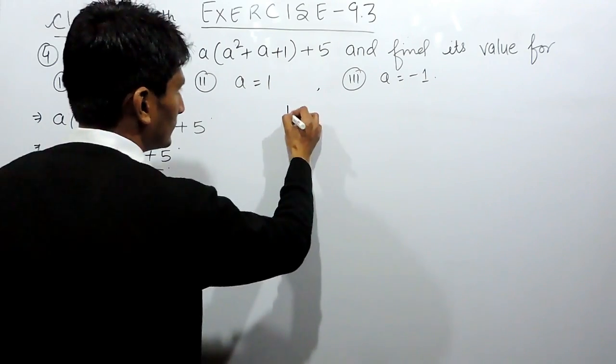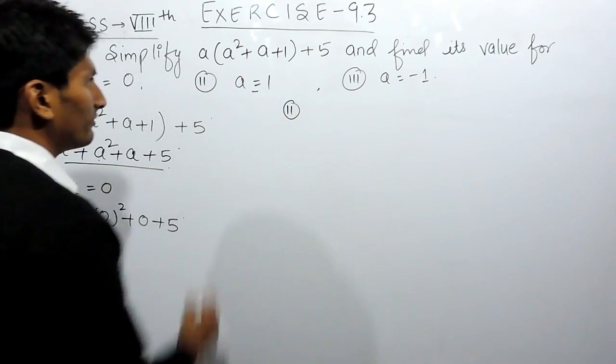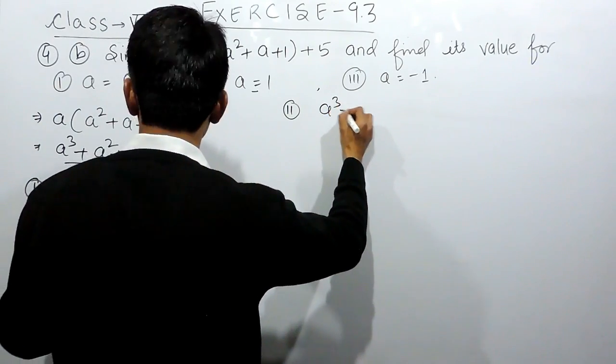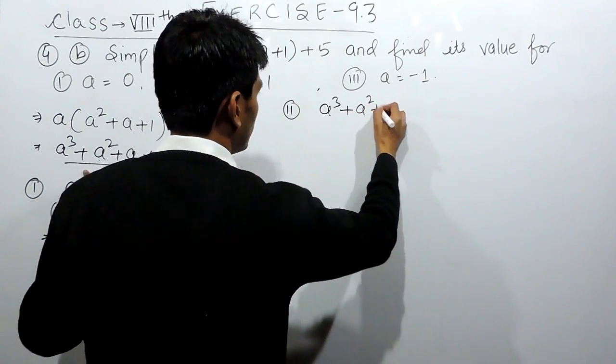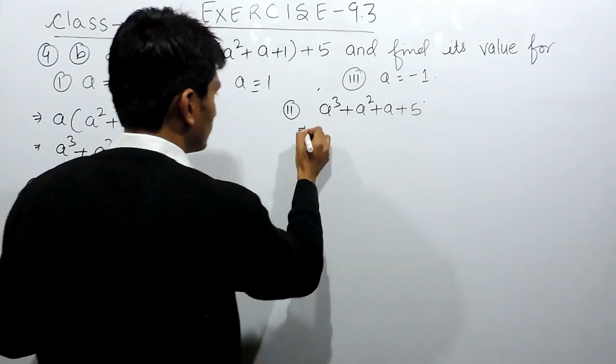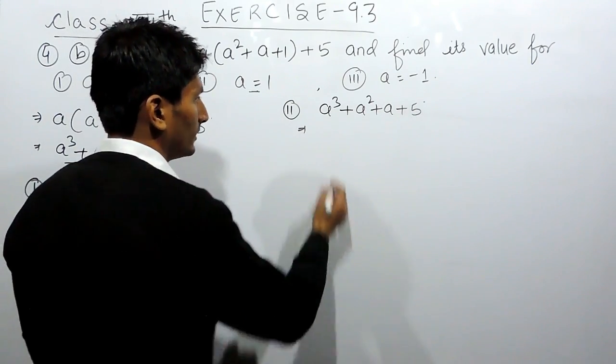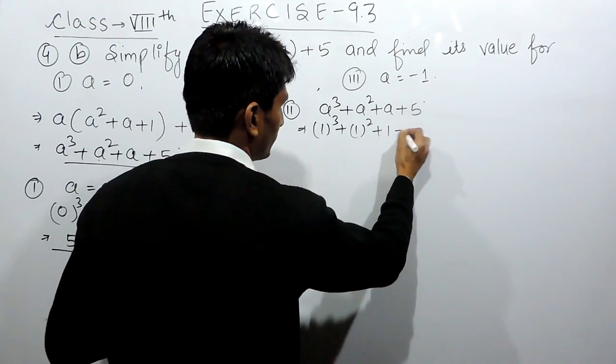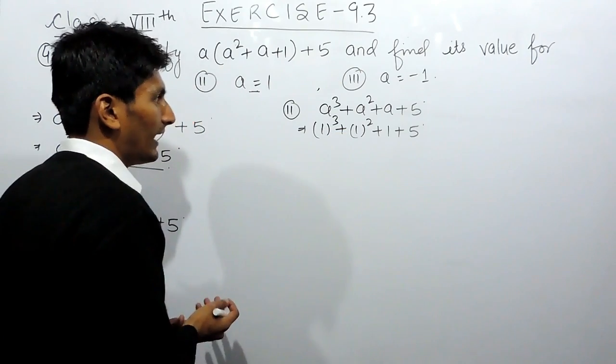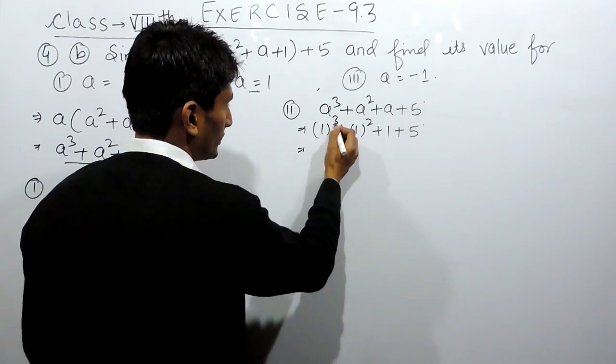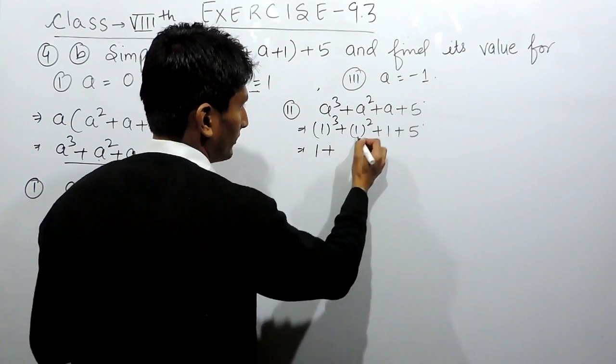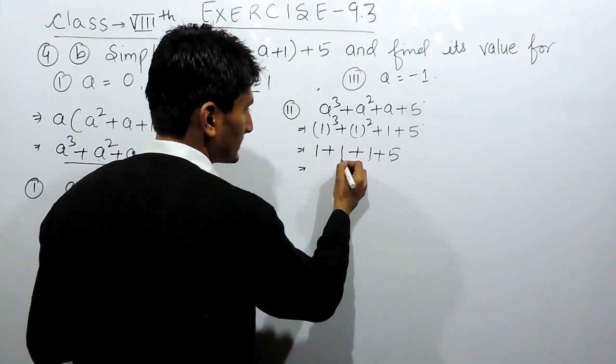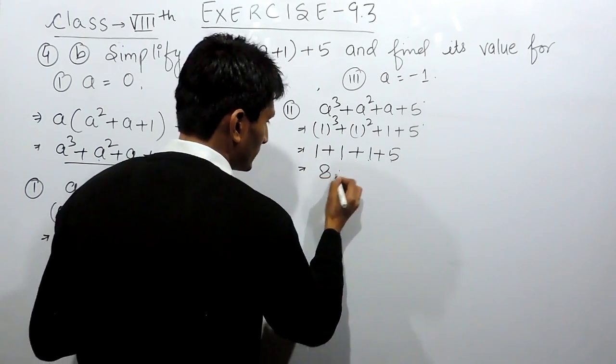Now in the second case, we have to substitute the value of a in this same expression. So if I substitute the value in a cubed plus a squared plus a plus 5 as 1, I have to substitute the value of a as 1. So this will become 1 cubed plus 1 squared plus 1 plus 5. So instead of a, I am writing here as 1. So 1 cubed is 1, 1 squared is 1, 1 plus 5, so 1 plus 1 plus 1 plus 5 equals 8.